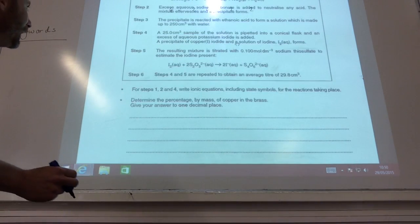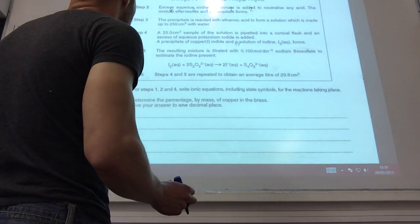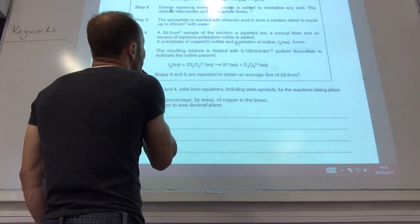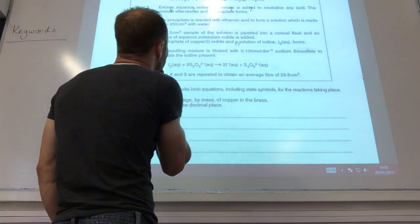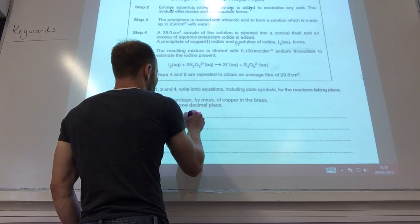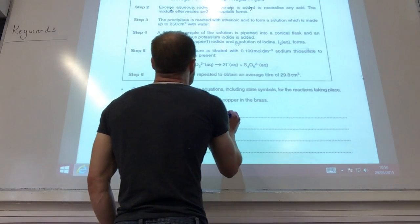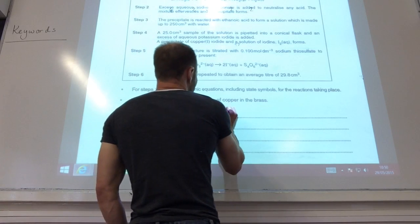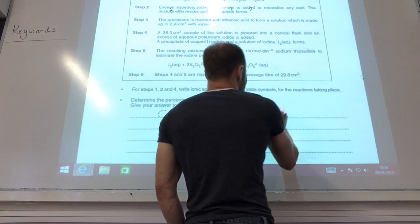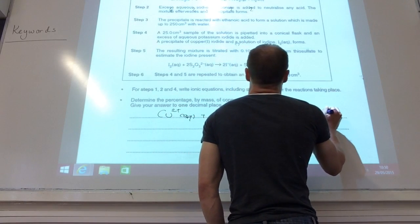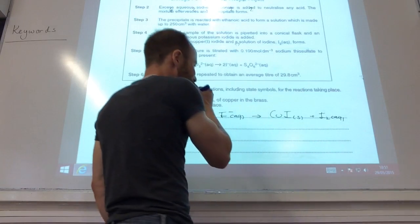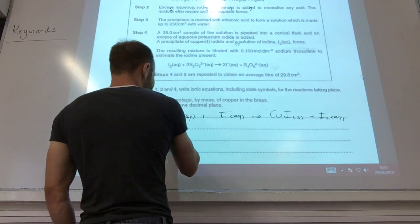So the next one is step four. I'm going to keep equations for step four. So what's happening, I've got some copper two plus ions there. I've just added a whole load of iodide ions, and they've told me I've made copper one iodide precipitate plus iodine as a solution.